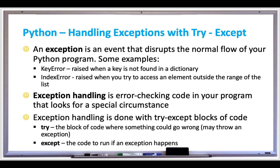There's a try block where something could go wrong — somewhere in that try block you'll have code that accesses a list or dictionary, for example. And if something goes wrong, the except block of code will catch that exception and run whatever code you need to handle the exception when it does happen.